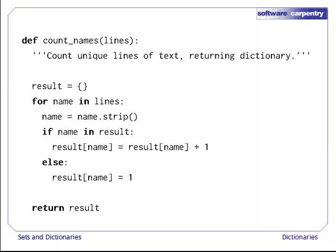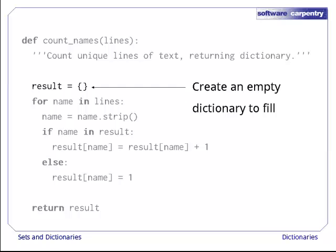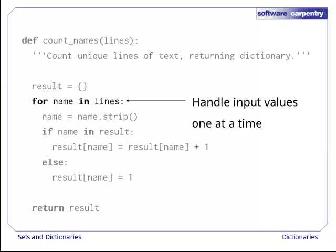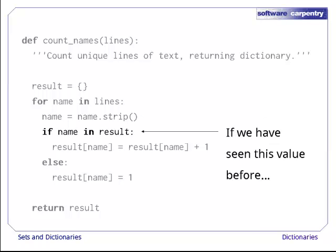Here's the function that does the counting. As always, we start with a doc string to explain the function's purpose to whoever has to read it next. We get set up by creating an empty dictionary to fill with data, then loop over the strings in the input list one by one.